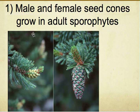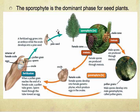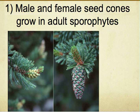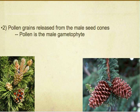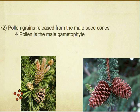There is also a procedure for it to become a whole plant — there are seven steps. The first step is the male and female seed cones grow into an adult sporophyte, meaning the male and female cones grow up into larger bodies. The second step is pollen grains are released from male seed cones, and pollen grains are the male gametophyte.